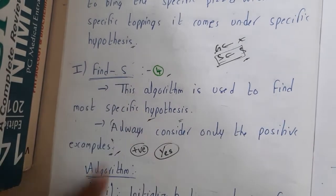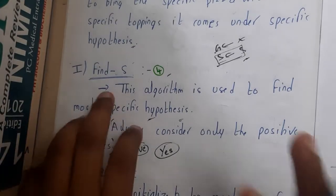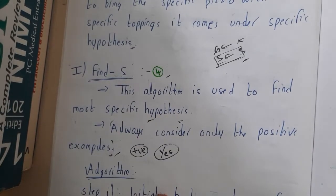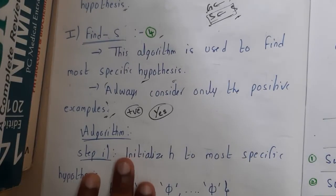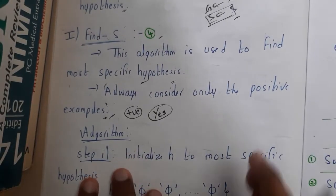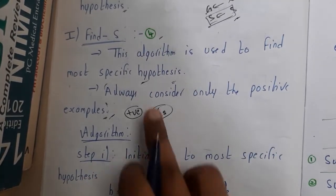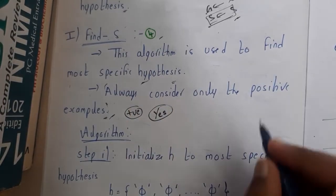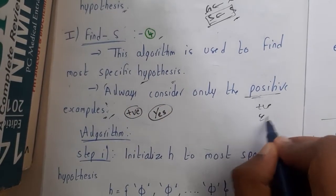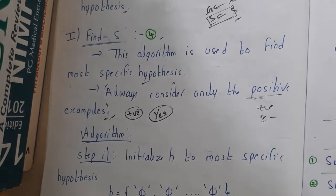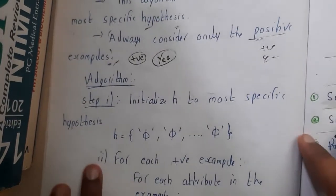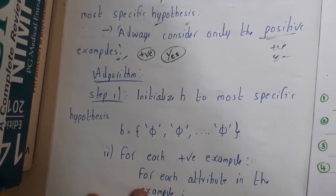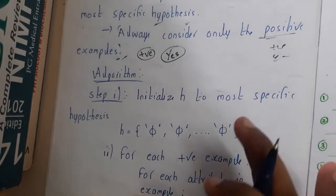The final goal of the Find-S algorithm is to find the specific hypothesis — at the end you want to identify the specific things you need. We always consider the true values only, or the positive examples — the 'yes' examples only — in the Find-S algorithm.